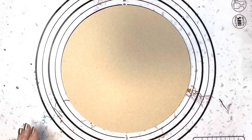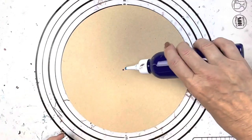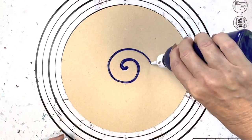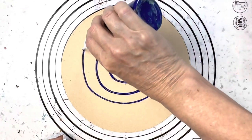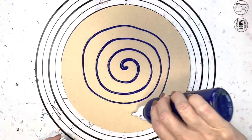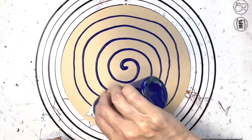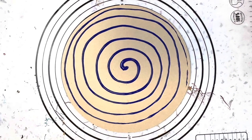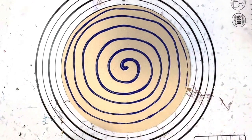So the first one I'm laying down is the Montmartre Dimensions Phthalo Blue. So I'm basically going to start in the middle and just do a spiral.